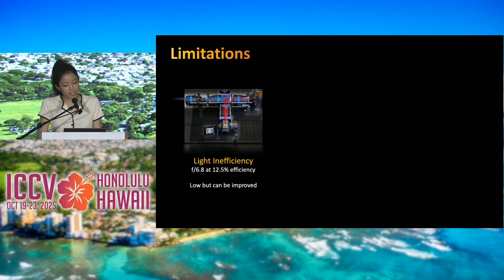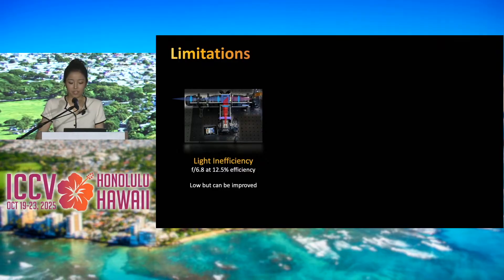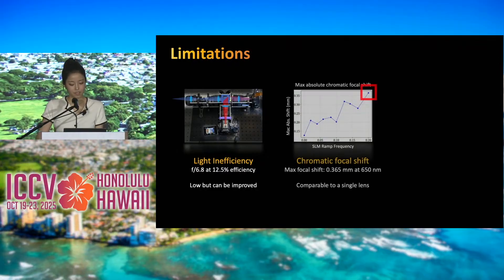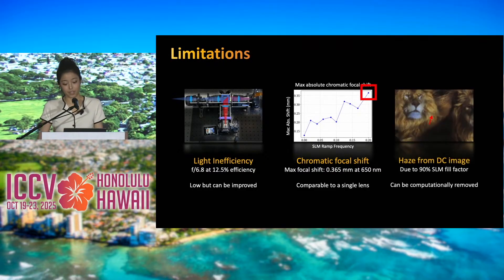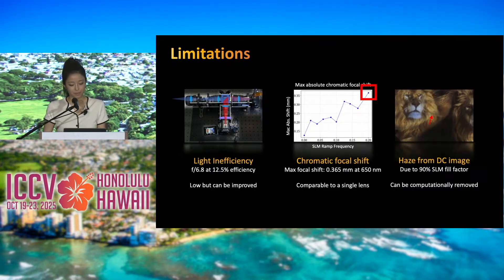There are three key limitations of our technique. The current prototype is light inefficient, though we believe alternative optical designs can improve light throughput. Our system is designed for green light, resulting in a slight chromatic focal shift for blue and red light. There is also haze from the DC image due to limitations of the SLM, which we believe can be computationally removed.